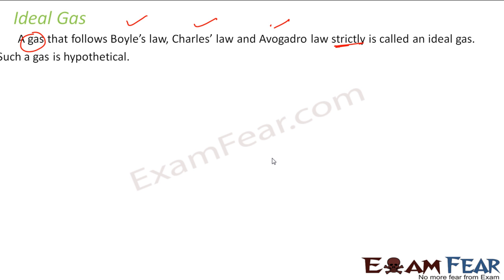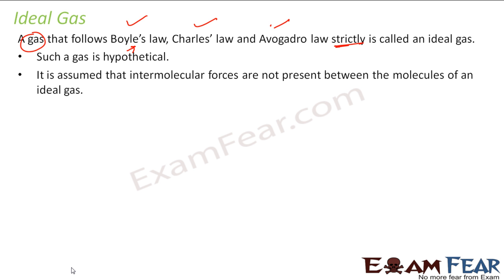Any gas that follows all these laws strictly is called ideal gas and it is actually a hypothetical gas. There is no such gas that exists. It is assumed that intermolecular forces are not present between the molecules in ideal gas and that's why they behave ideally. And that's not the truth.